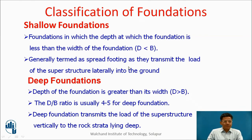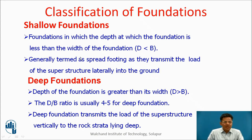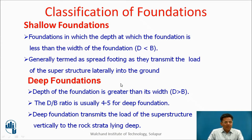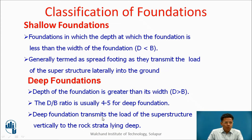Now let us classify the foundation. Foundations can be classified basically into two parts: shallow foundation and deep foundation. A shallow foundation is one where the depth at which the foundation is laid is less than the width of the foundation — that is, d less than b. A deep foundation is where the depth is greater than the width, with a d/b ratio usually 4 to 5, such as pile foundations. Deep foundations transmit the load of the superstructure vertically to the rock strata lying deep.